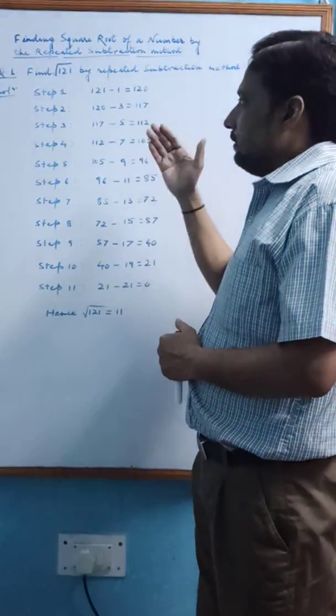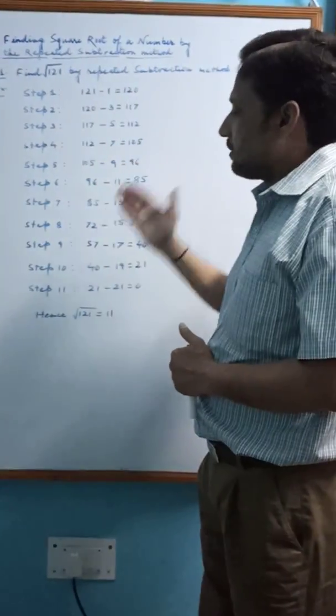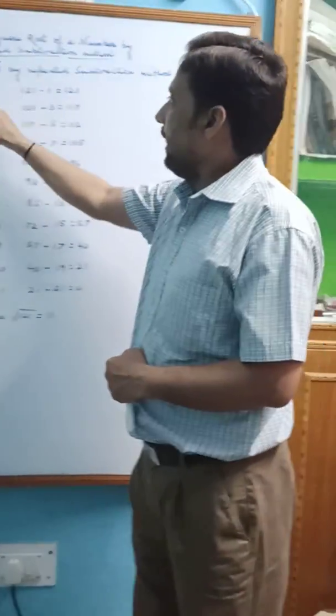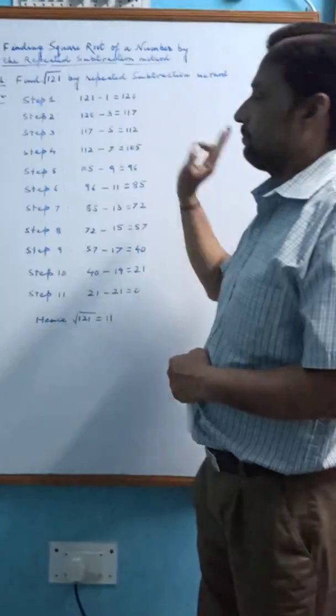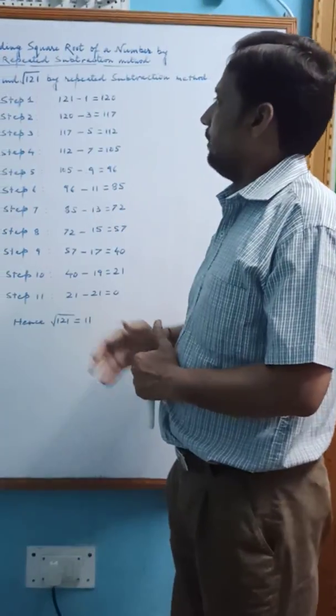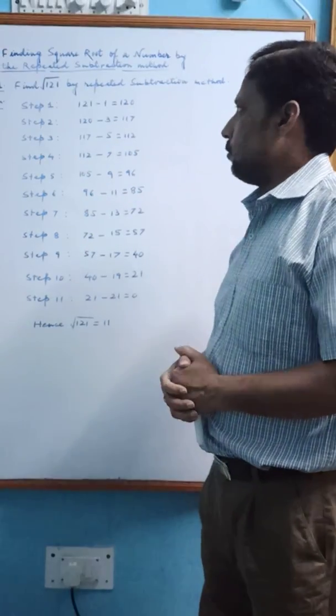In this method, we subtract only odd numbers in every step. Here we will see the solution of the square root of 121.